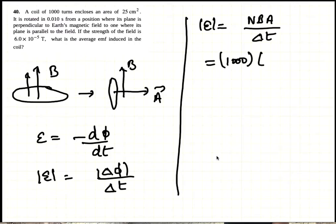1000, B is 6 times 10 minus 5 Tesla, and area is 25 centimeters squared, which is meters squared.